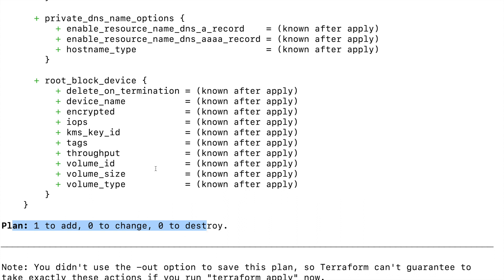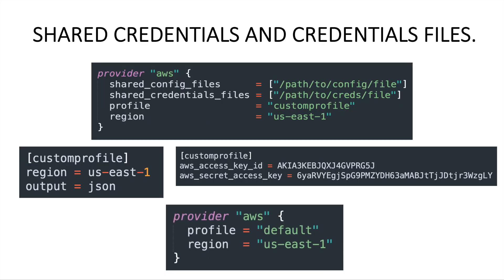This is how we can make use of the shared config file and the shared credentials file to give the necessary permissions. This is one approach. You can also make use of aws configure — if you have worked with the AWS CLI, running that command will automatically generate the config file and the credentials file. One way is to go with a custom path and manually create the files; alternatively, using aws configure, the AWS CLI tool will automatically create the config and credentials files, which we can then use.